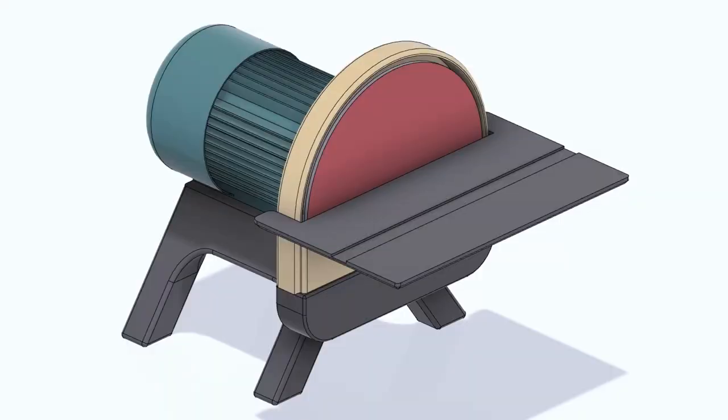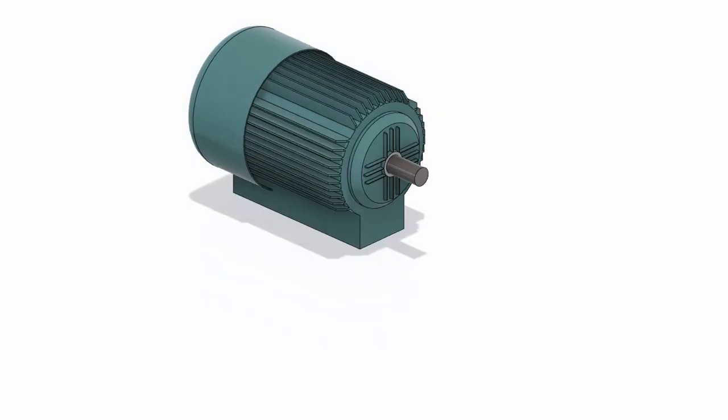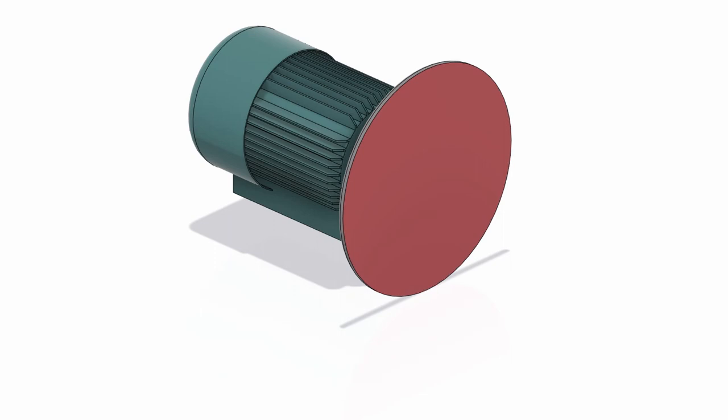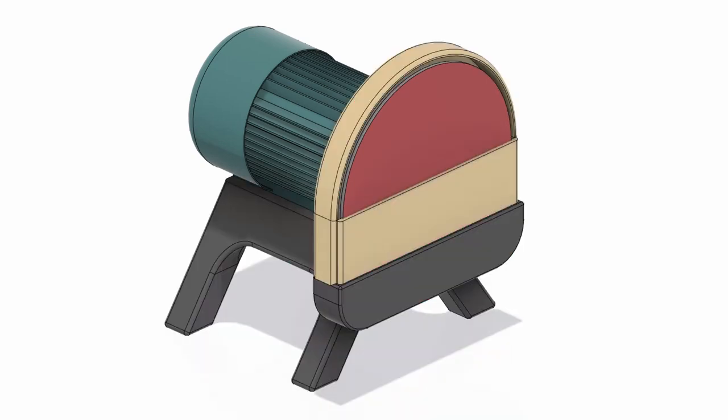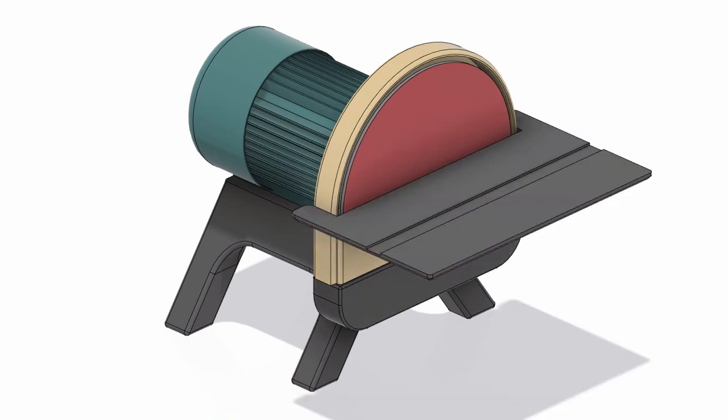Most disk sanders consist of five components: an axis with a motor, a disc with sandpaper on it, a frame that holds the axis in place, a body that covers the sandpaper disc, and a work surface.